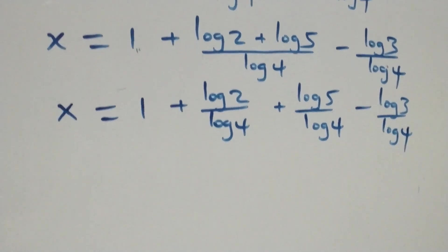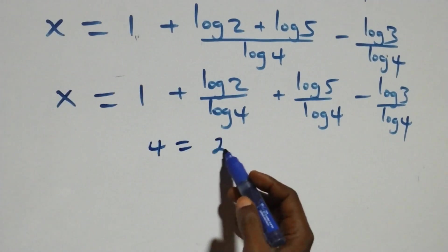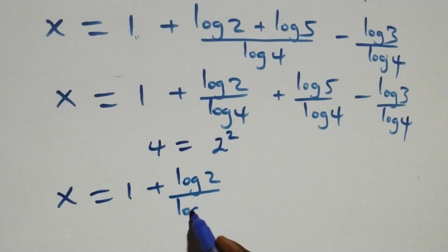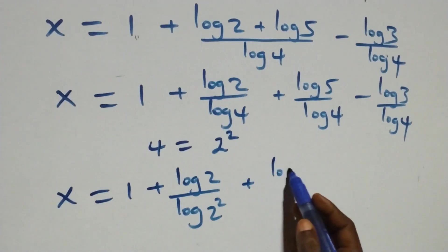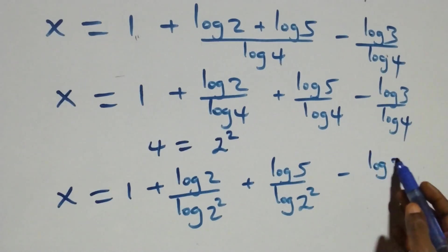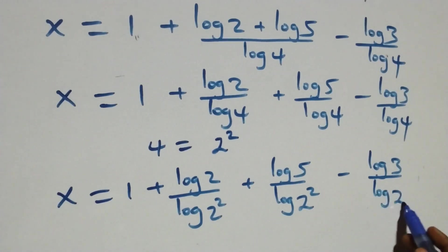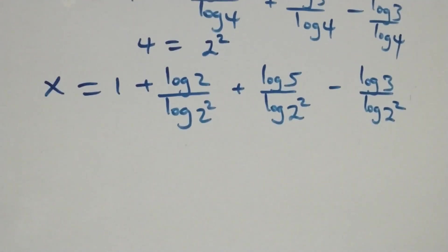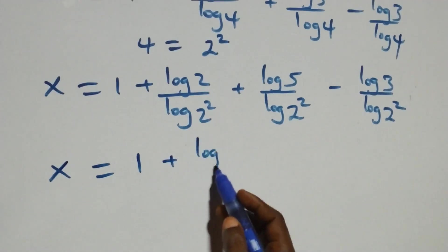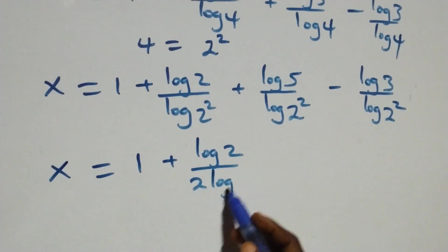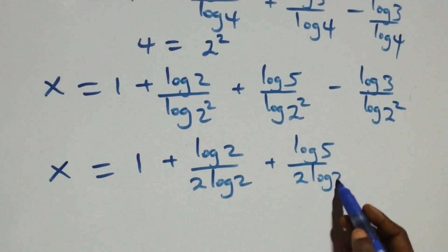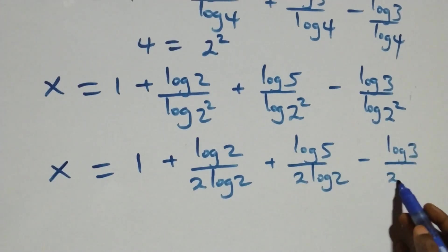Also, 4 can be expressed as 2 times 2, which is 2 squared. So everything becomes x equals to 1 plus log 2 over log 2 squared, plus log 5 over log 2 squared, minus log 3 over log 2 squared. We apply the power law of logarithm — the 2 comes down — giving x equals to 1 plus log 2 over 2 log 2, plus log 5 over 2 log 2, minus log 3 over 2 log 2.